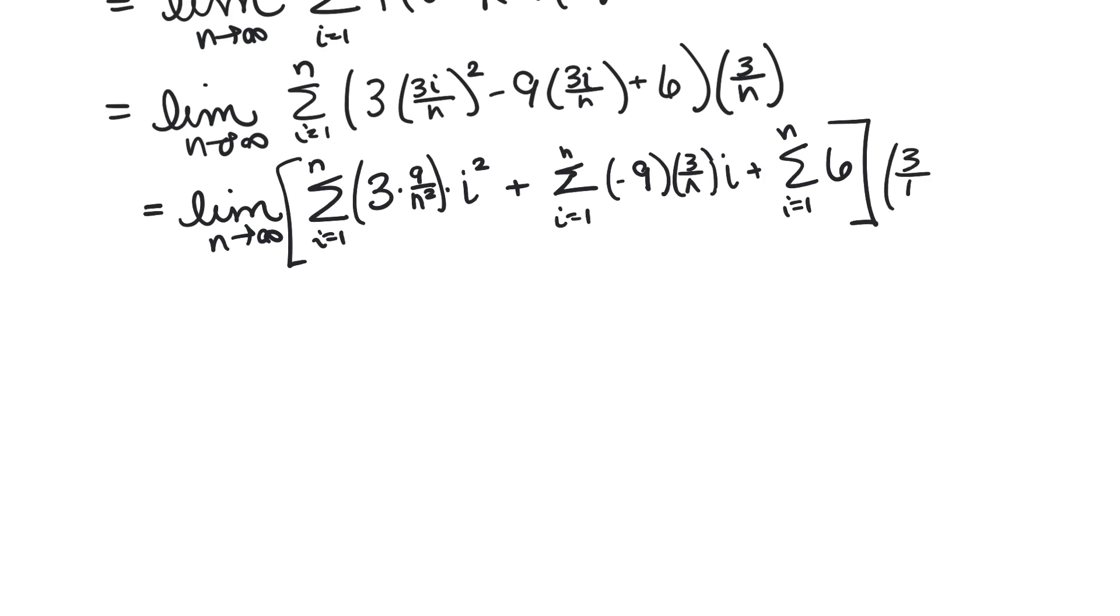And then we have a 3 over n times all that. And so now we can pull those constants out, anything that doesn't depend on i. So we get 27, combining the 3 and the 9, over n squared, the sum i goes from 1 to n of i squared, minus 27 over n the sum i goes from 1 to n of i, plus the sum i goes from 1 to n of 6.